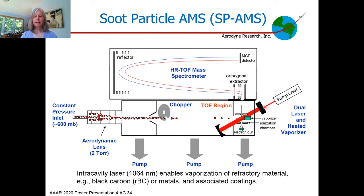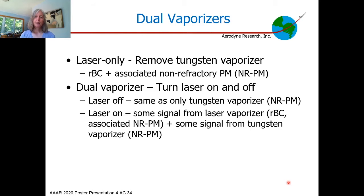The SP-AMS incorporates a 1064 nanometer laser into the vaporization and ionization region of an aerosol mass spectrometer. This allows us to detect material that absorbs at 1064 nanometers, such as black carbon and metals, and their associated coatings.